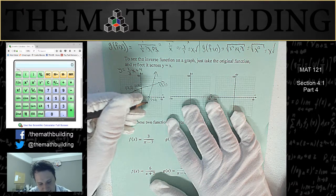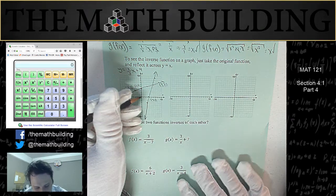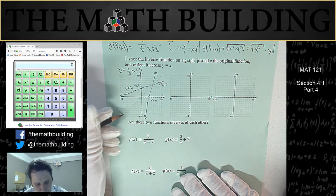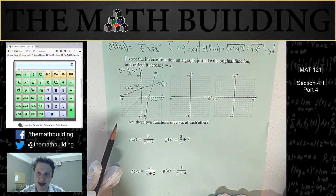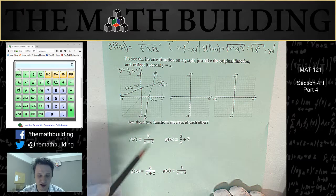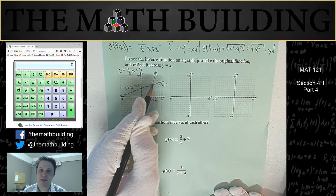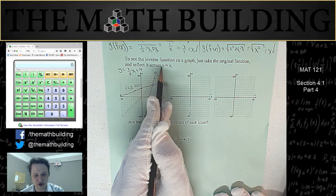You can see that our function and our inverse function do cross each other. And there's something special about where they cross. Here's the line y equals x, just up 1 over 1 going through the origin. And what you'll notice is that a function and an inverse basically reflect over the line y equals x. This reflects over the line, which becomes this, and vice versa.